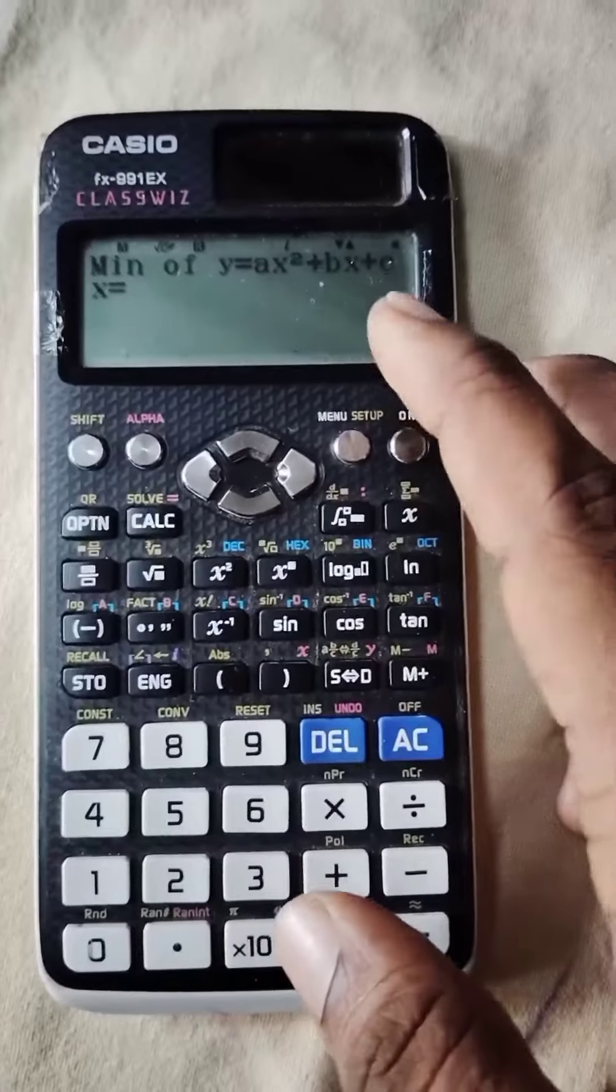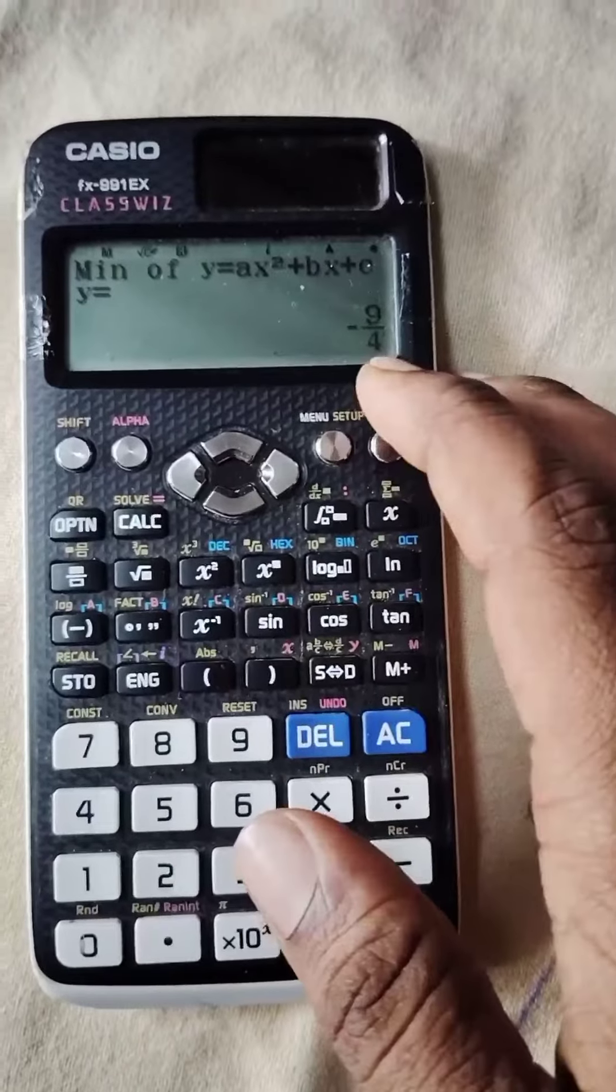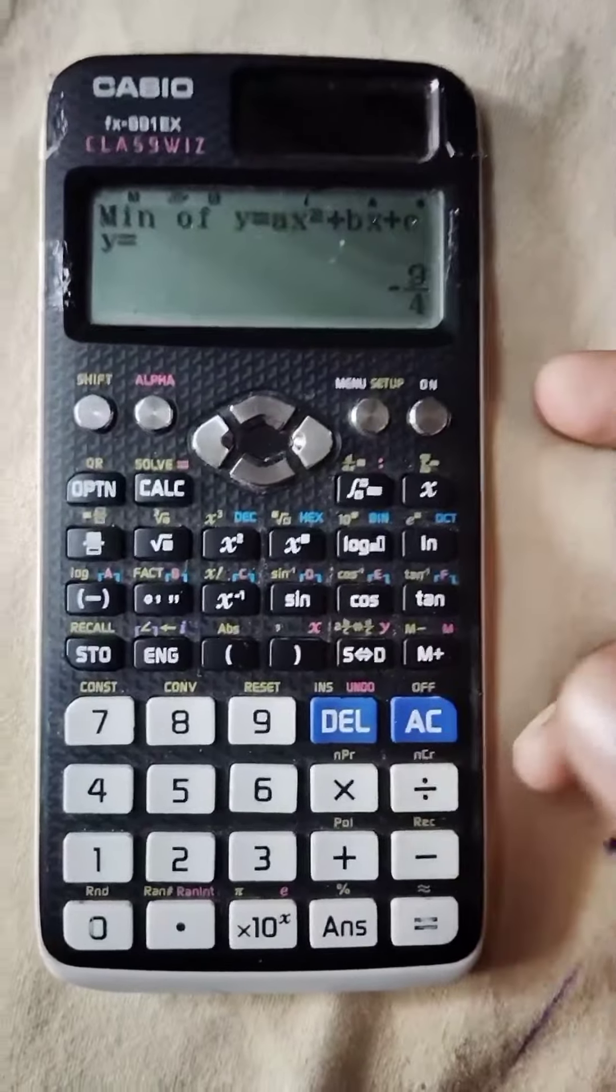Next, minimum value is automatic. x equals 7 by 2, y equals minus 9 by 4. So the minimum value equals minus 9 by 4.